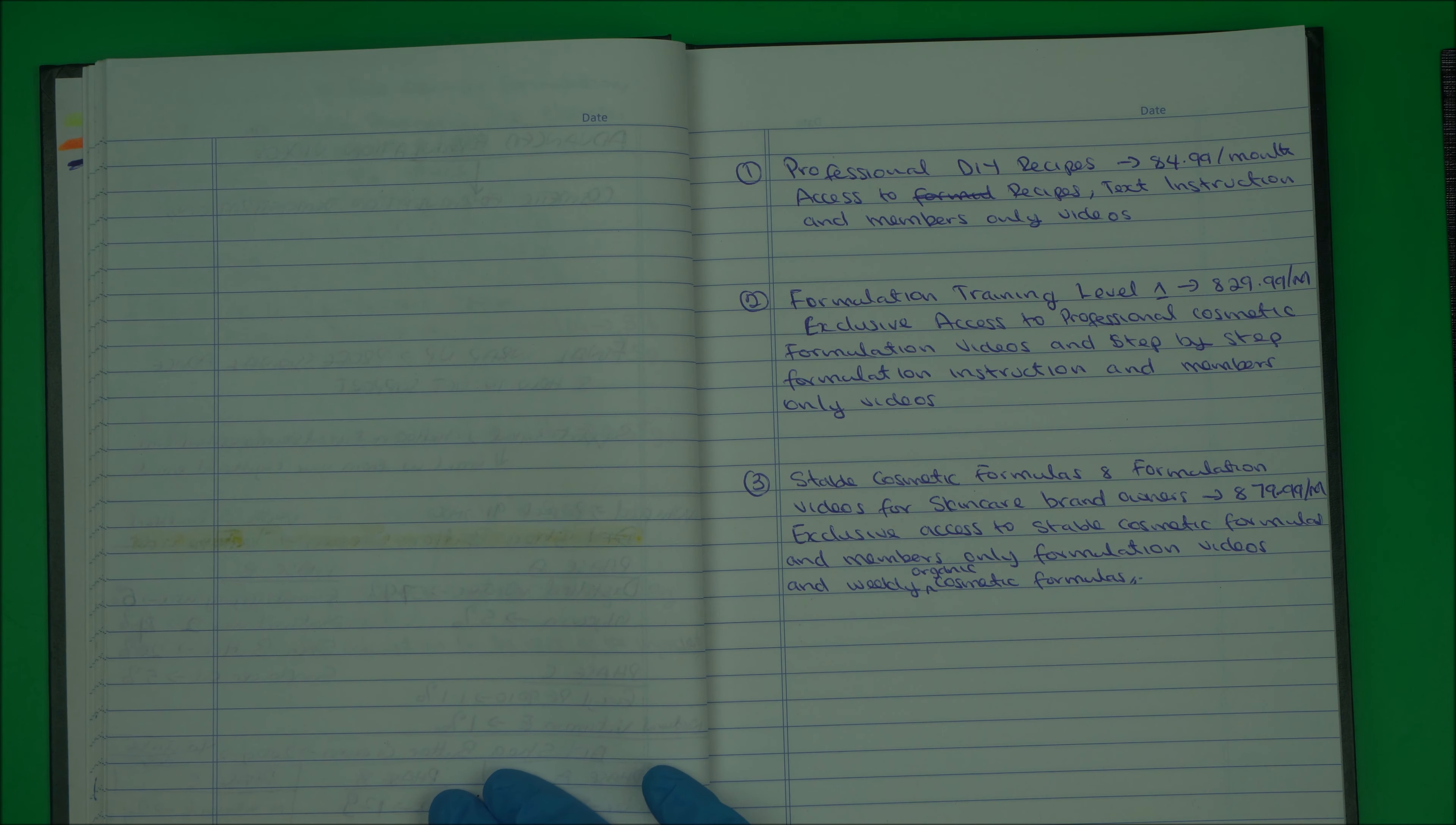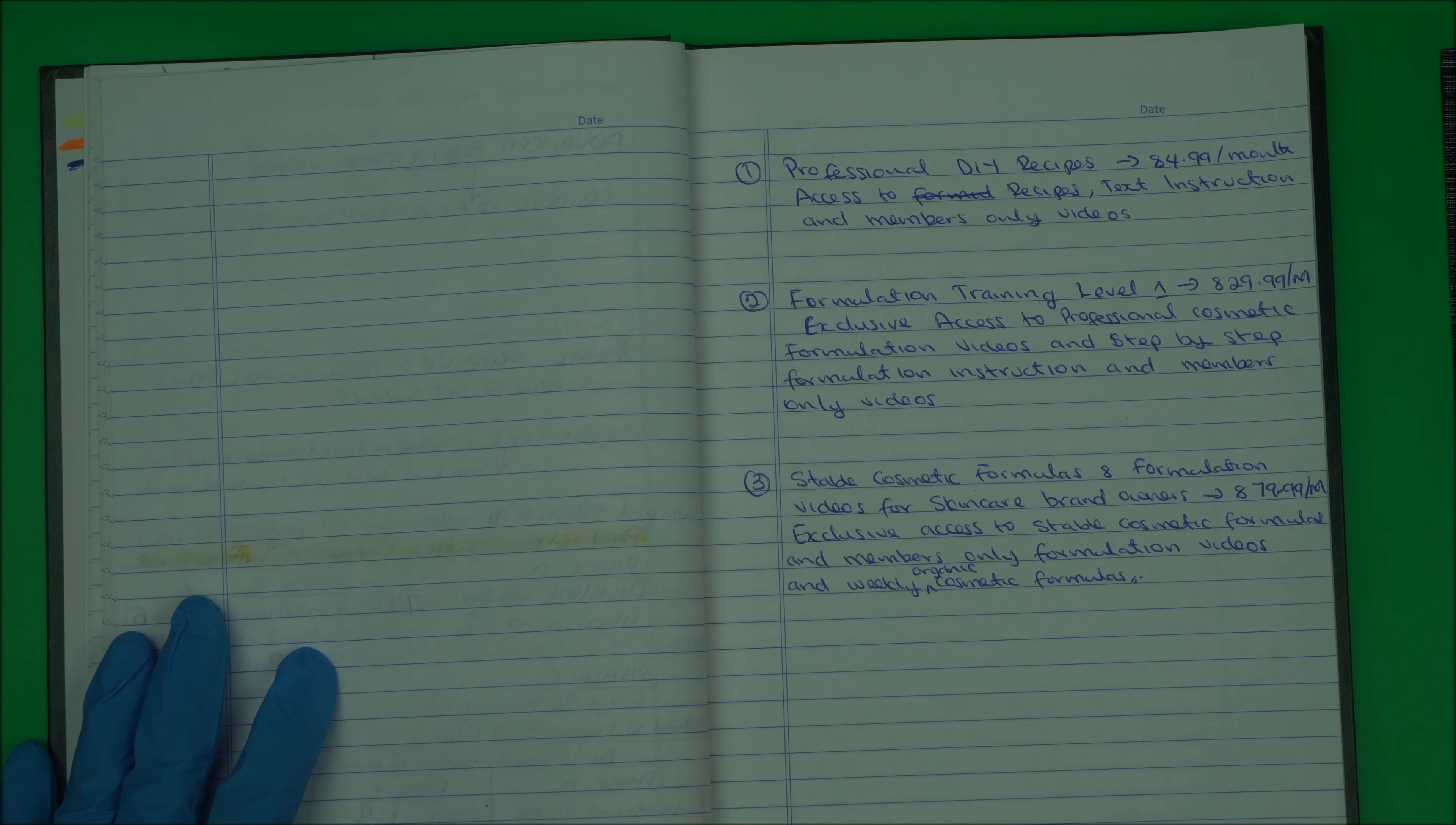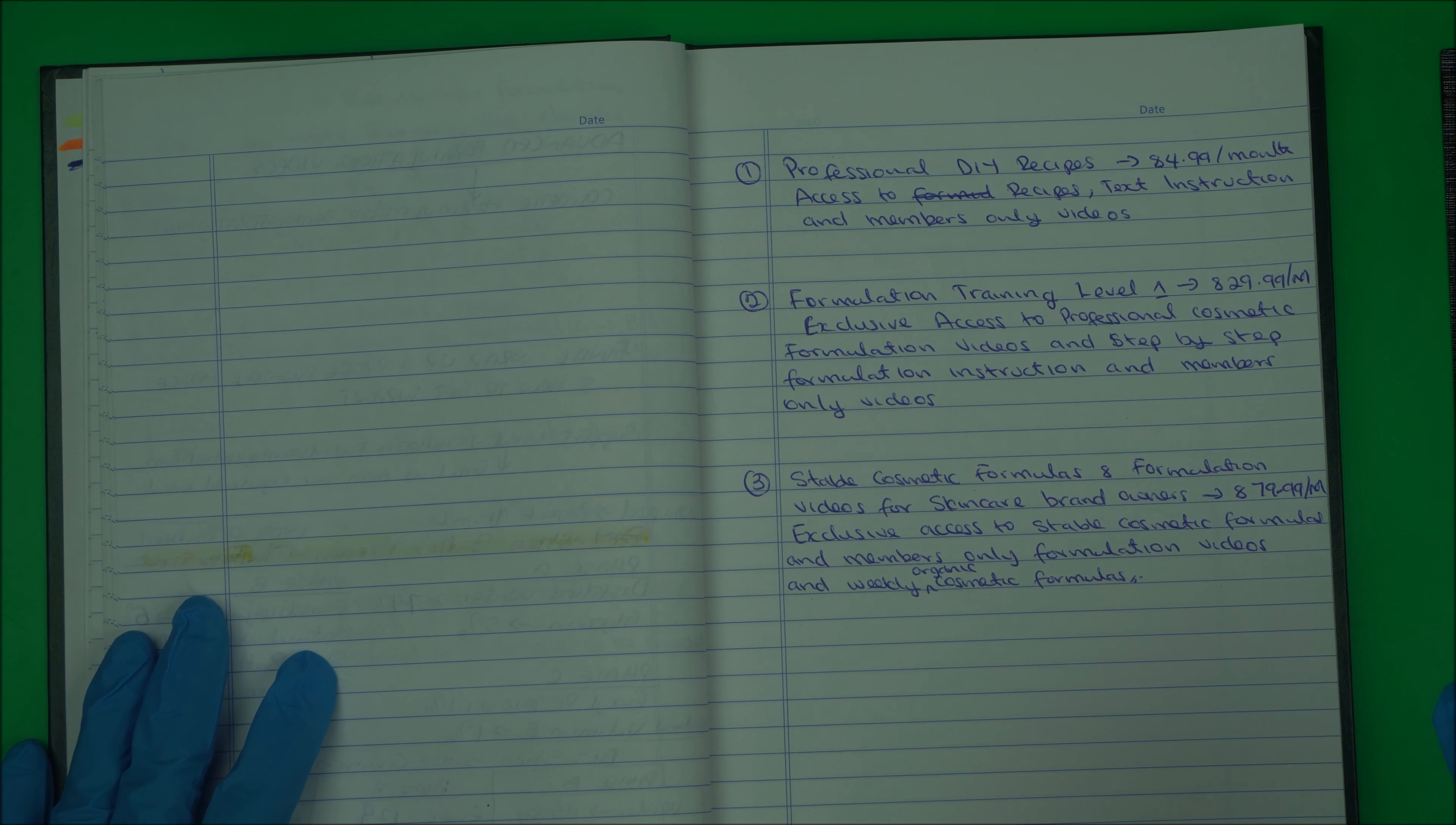The first one is Professional DIY Recipes. I'm going to give you a lot of great DIY recipes you can use to make good skincare products you can use and make by yourself at home. That membership costs $4.99 per month.